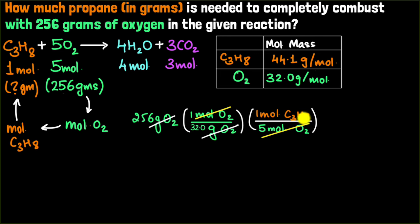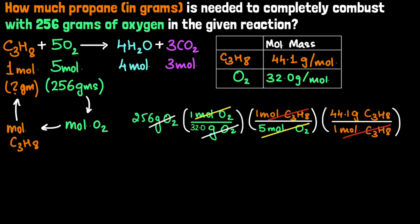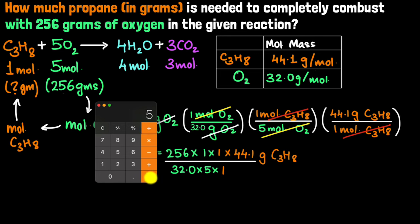To convert moles of propane to grams, I want grams on the numerator and moles in the denominator so they cancel. I write this as 44.1 grams per one mole of propane. The moles cancel and I'm left with grams of propane. Plugging in: 256 × 1 × 1 × 44.1 ÷ 32.0 ÷ 5 ÷ 1 = 70.56.